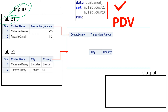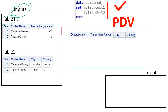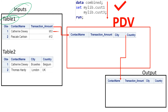Whatever additional column SAS finds in the next table, it is placed after the last variable read from the previous table or from the first table. Once it is completed in PDV, it is again placed and populated in the output area. Then SAS goes back to table one and looks for the first observation.